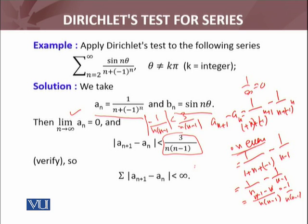Now consider this series: summation 3 over n(n−1). This series is convergent. So by comparison test we can conclude that summation |an+1 − an| is also convergent.